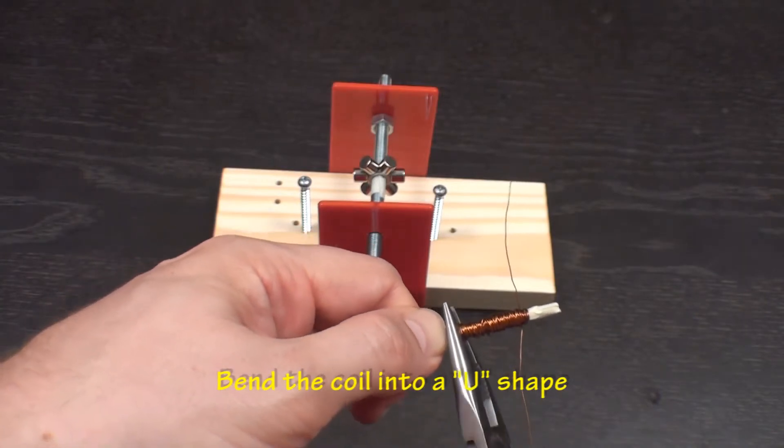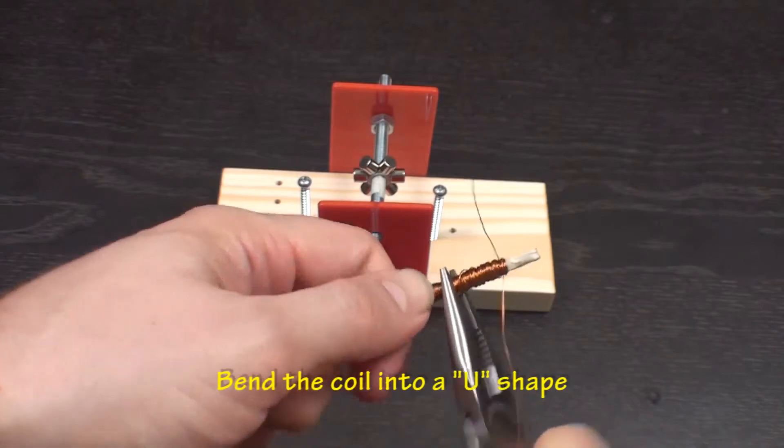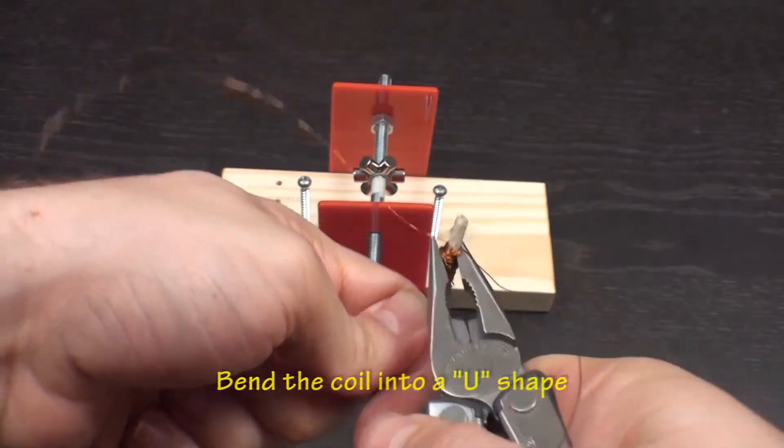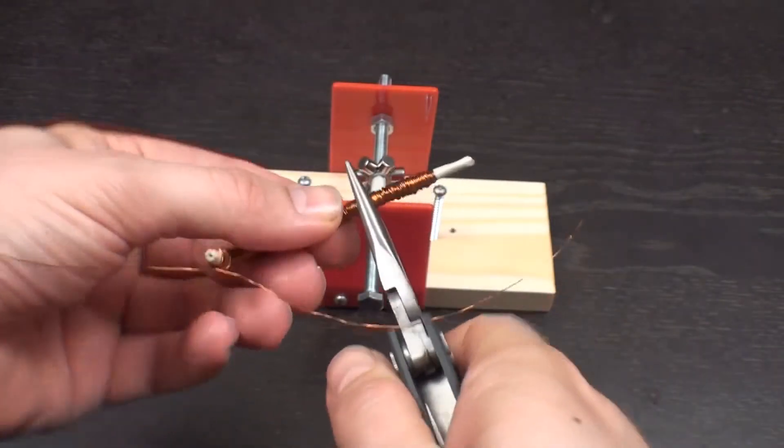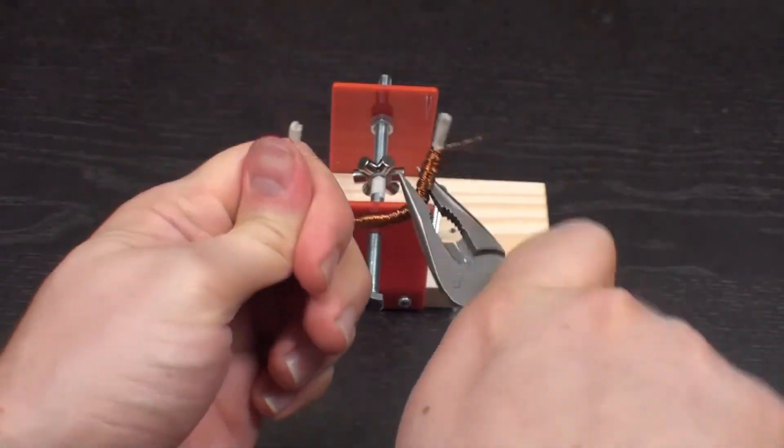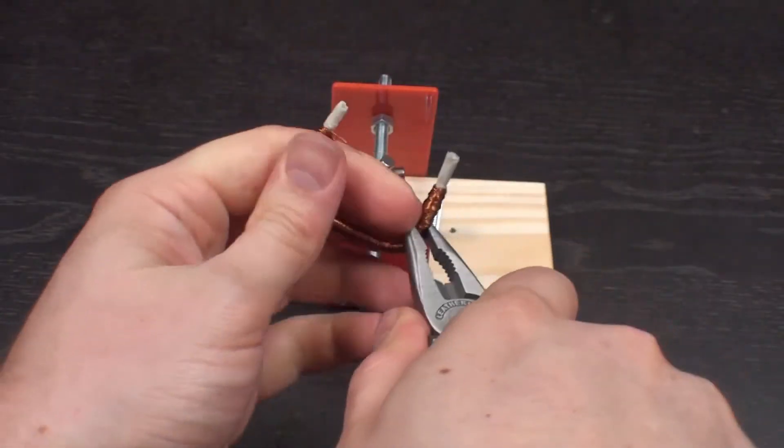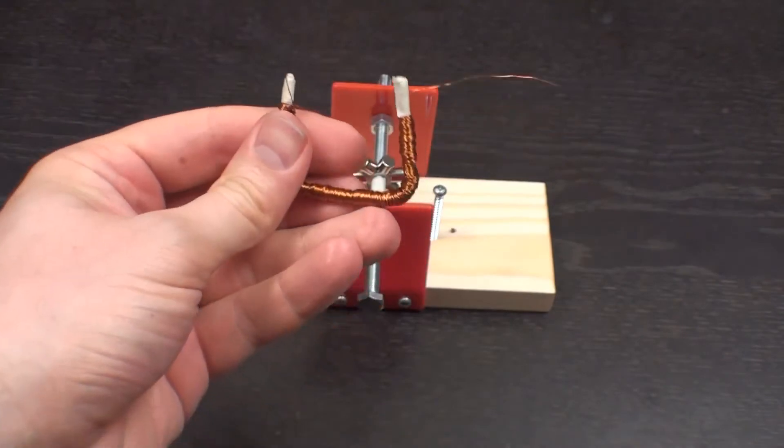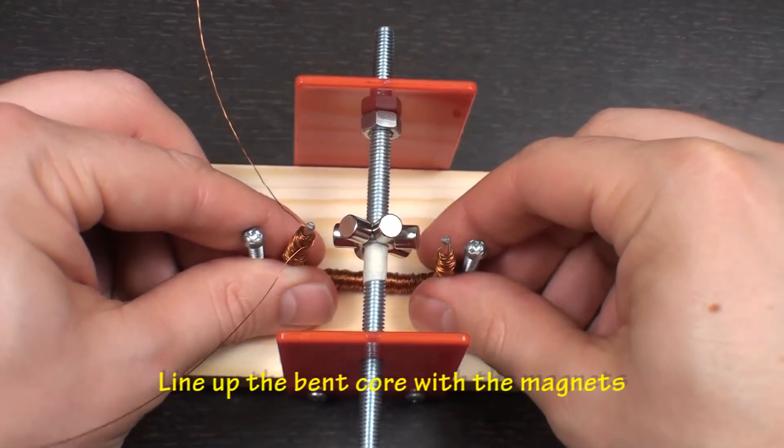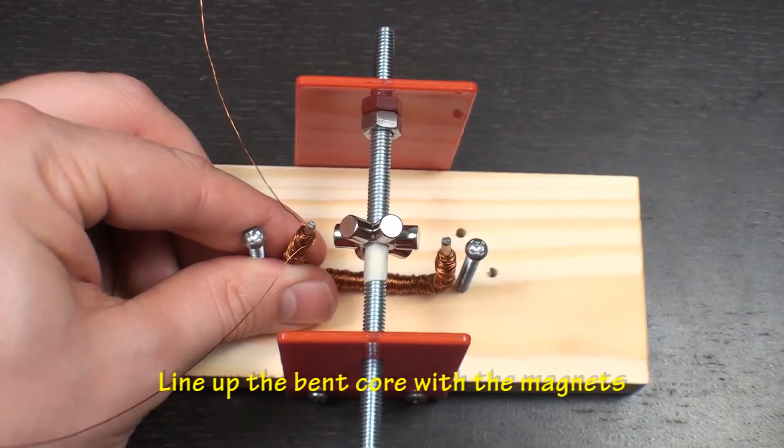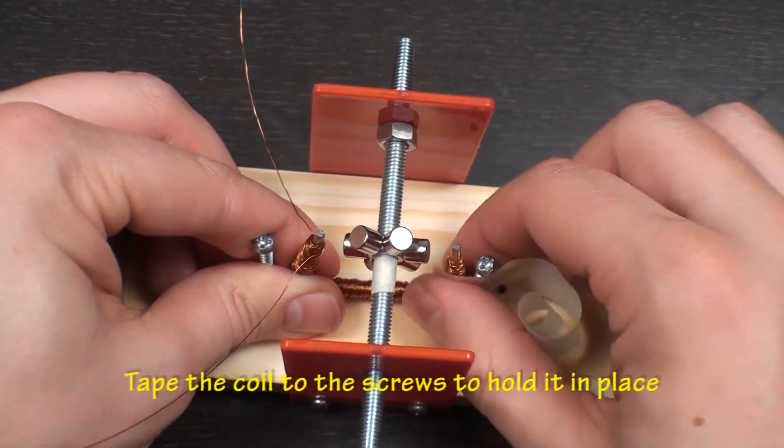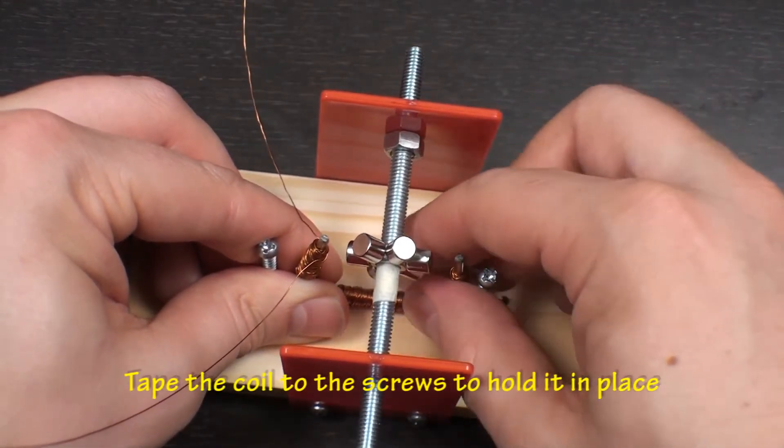You will need to bend the coil into a U shape. Place the bent coil between the two screws with the magnet between the tips of the coil. Once the position is established, tape the coil to the screw so that it won't move.